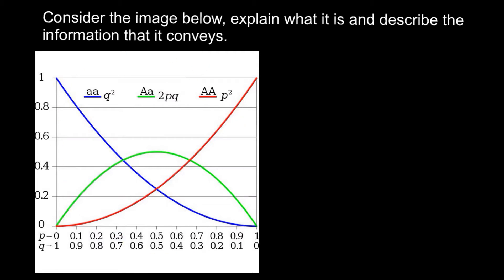This picture shows us Hardy-Weinberg equilibrium — how different genotypes, shown in three different colors, relate to each other in relation to the frequencies of two alleles found in a population. When we have two alleles — dominant allele A and recessive allele a — in a diploid organism they produce three genotypes: AA (homozygous dominant), Aa (heterozygous), and aa (homozygous recessive).